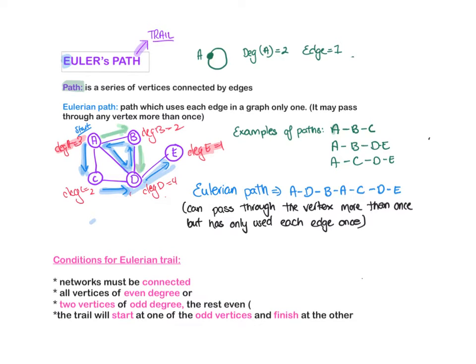When you have the two odd degrees, that's where you will start and finish at those vertices. You can see I started at the odd vertex and I finished at E. I could have gone the other way around, E and finish at A, but as long as I start and finish at the odd ones. So that's a Eulerian path.